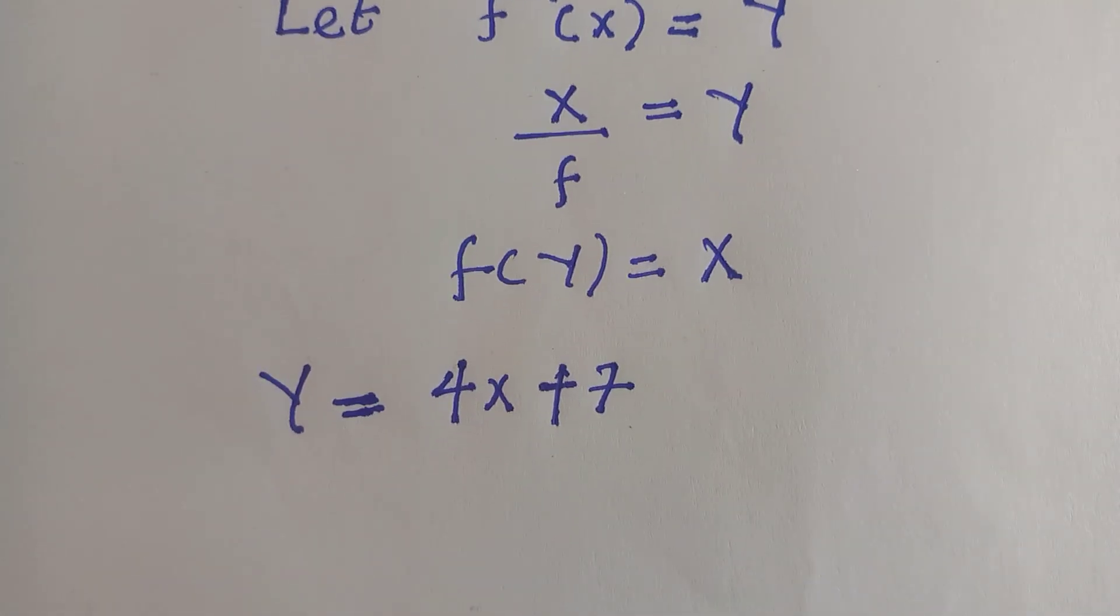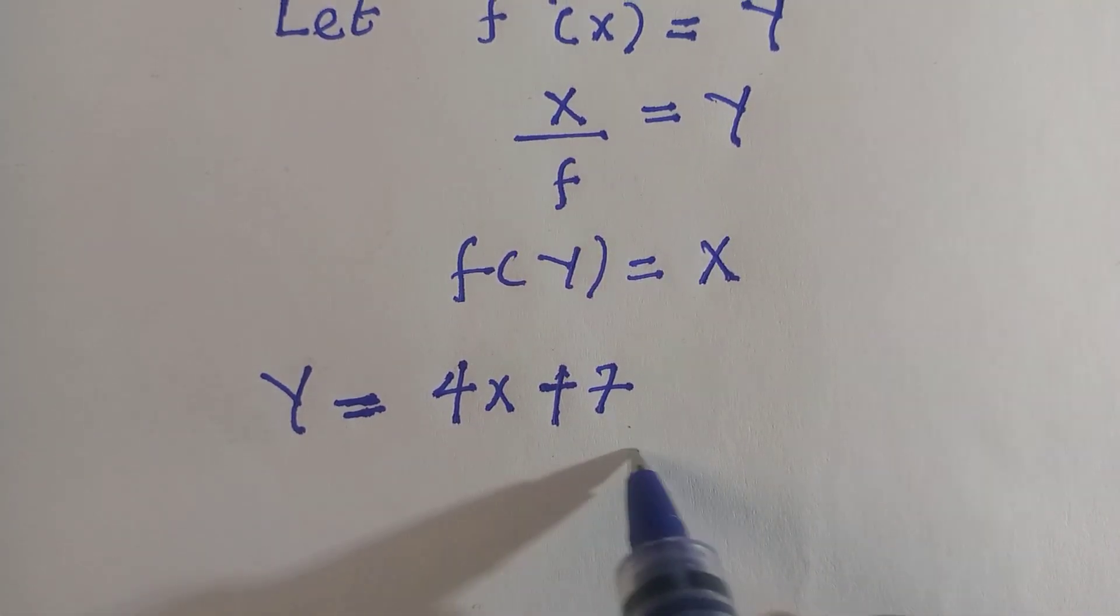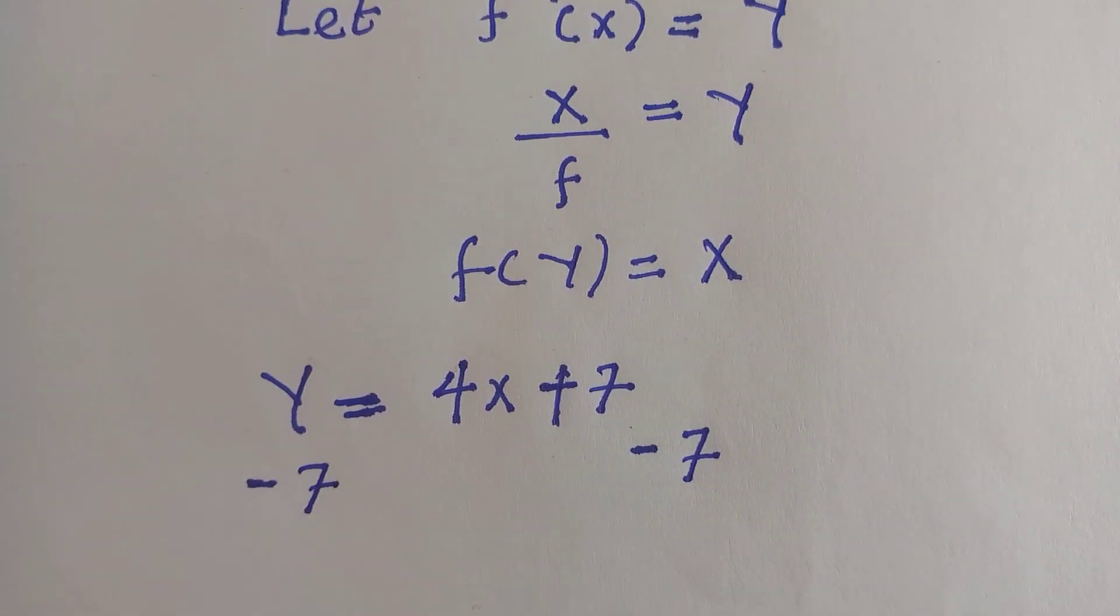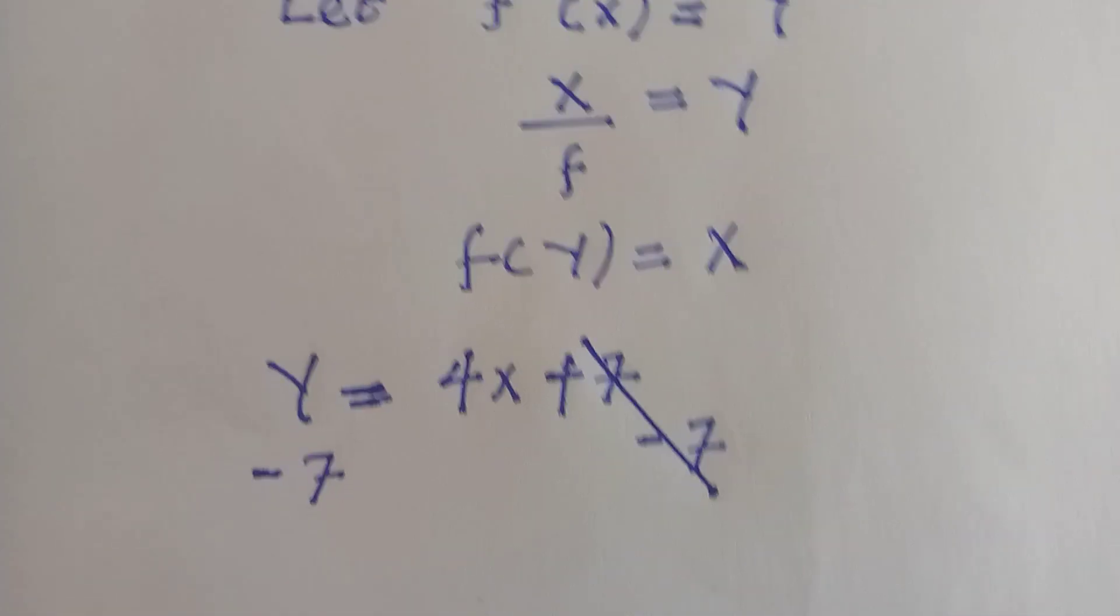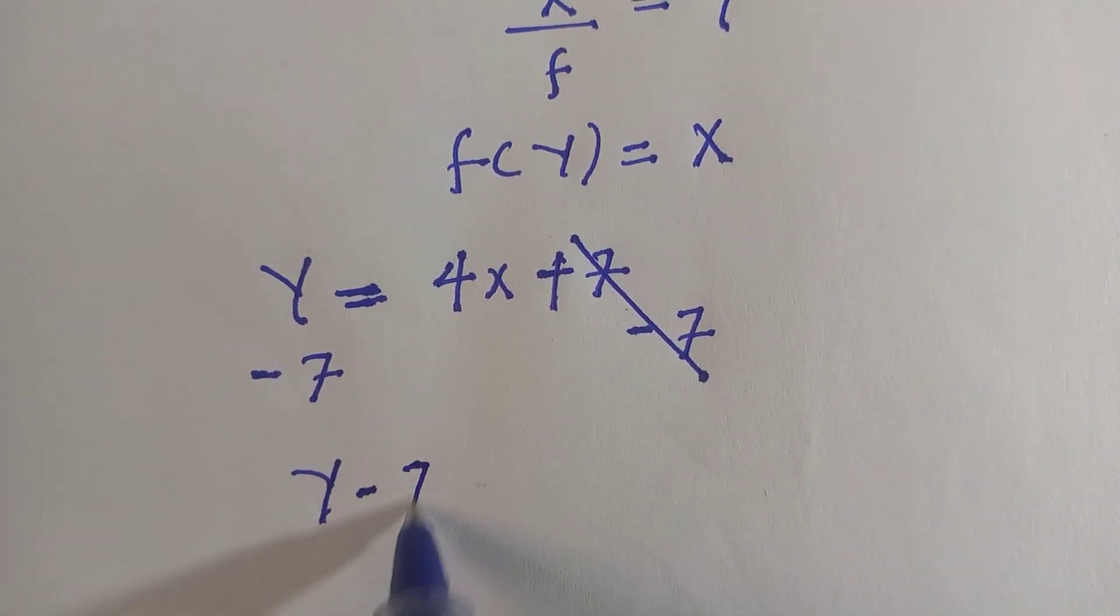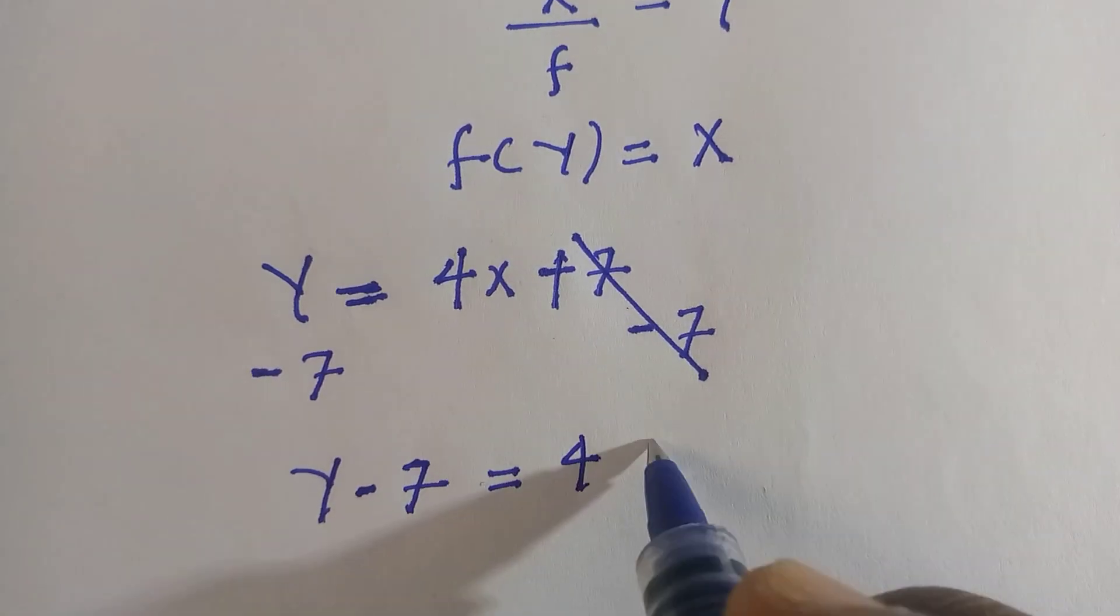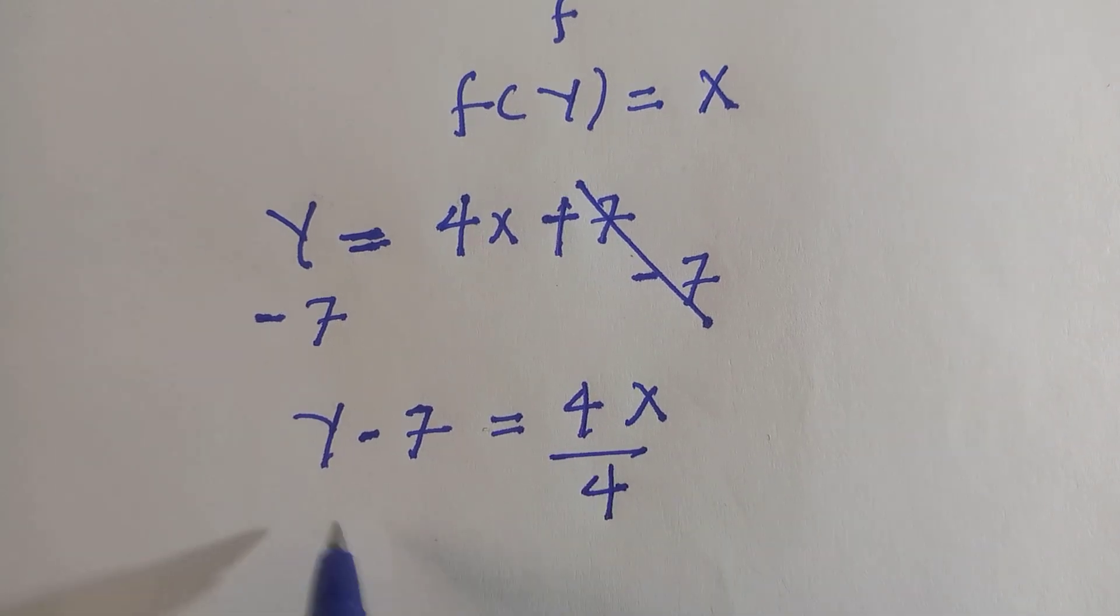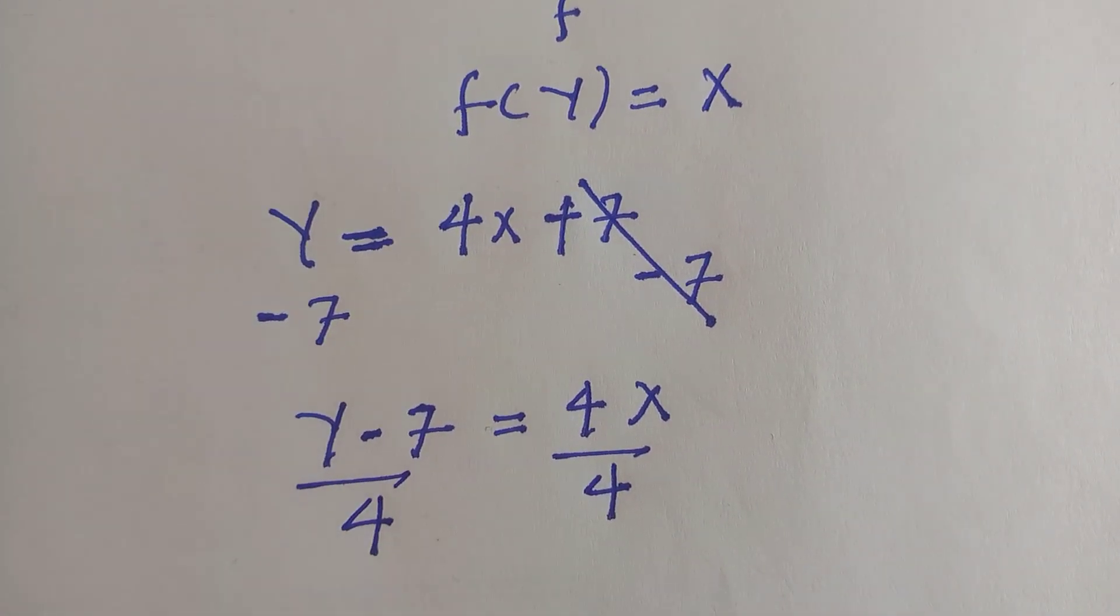I will make sure I let x be the subject of the formula here. To do that, we subtract 7 from both sides. And after doing that, these two are cancelled, and here we have y minus 7 equals 4x. We divide by 4 to make x the subject in full.